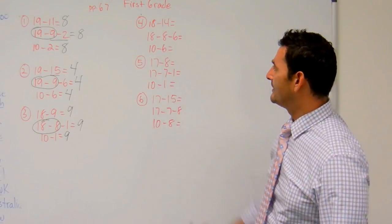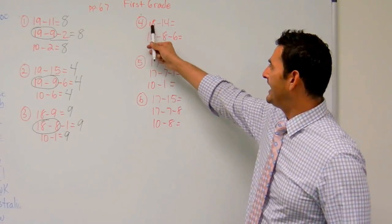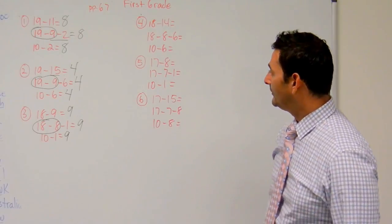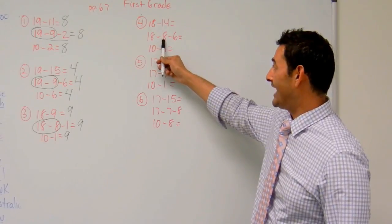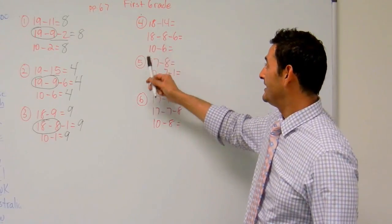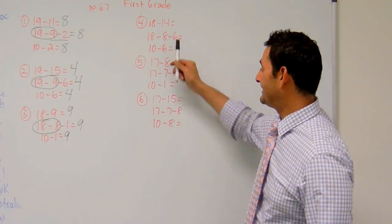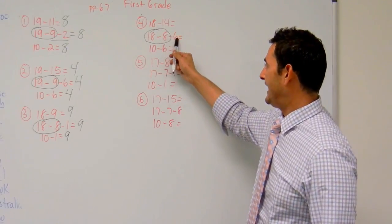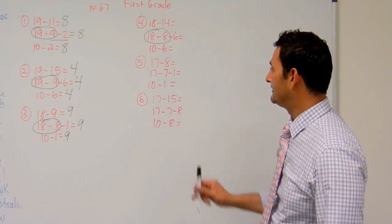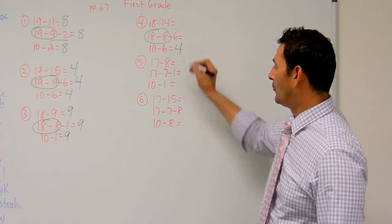Now let's take a look at number 4. Here we have 18 minus 14. Well, again, if I want to get a 10, then I'm going to have to subtract it by 8. So here we're going to have an 8 and a 6. So 18 minus 8 equals 10. The 8 and the 6 came from the 14. 10 minus 6 is 4.